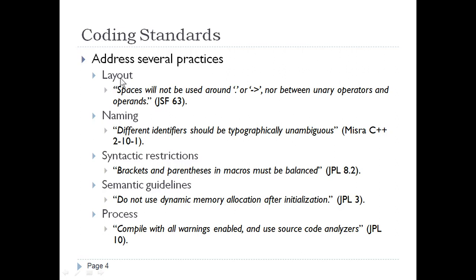For layout, spaces should not be used around dot and arrow operators. For naming, different identifiers should be typographically unambiguous. For syntactic restrictions, brackets and parentheses in macros must be balanced. Semantic guidelines say do not use dynamic memory allocation after initialization. The process says compile with all warnings enabled and use source code analyzers.